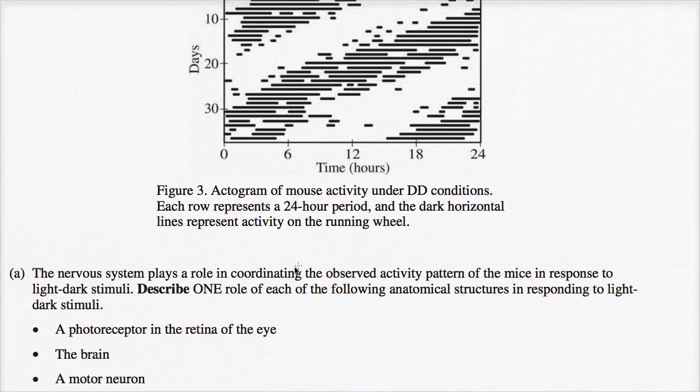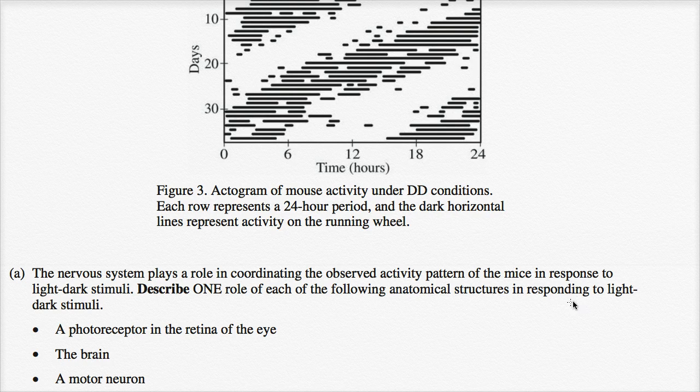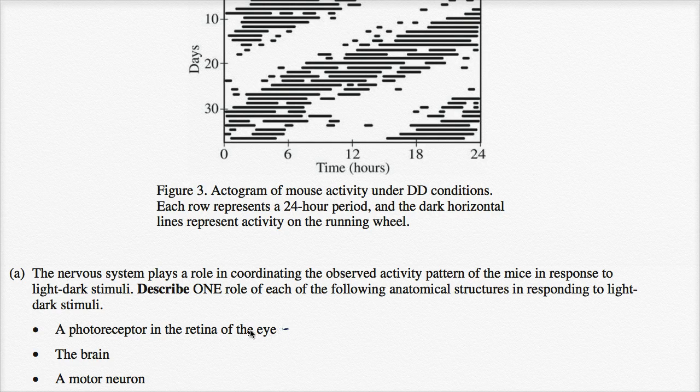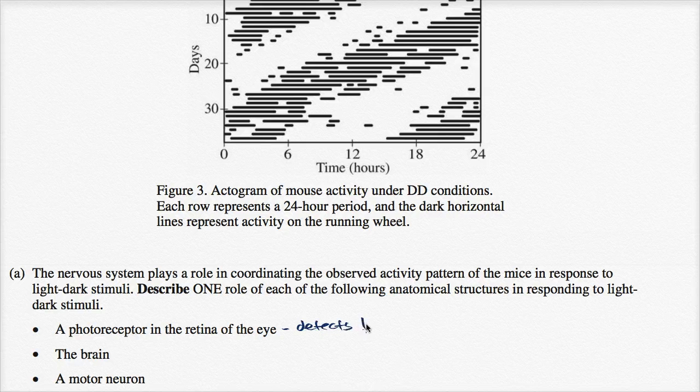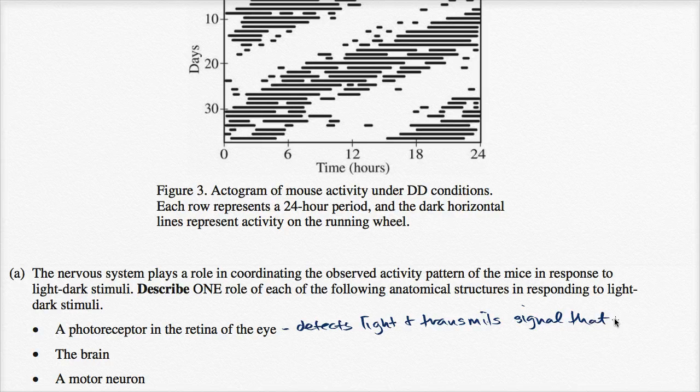Let's see if we can answer the questions. The nervous system plays a role in coordinating the observed activity pattern of mice in response to light-dark stimuli. Yes, that makes sense, of course. Describe one role of each of the following anatomical structures in responding to light-dark stimuli. A photoreceptor in the retina of an eye. Okay, well, this detects light. Detects light and transmits signal that eventually gets to the brain.